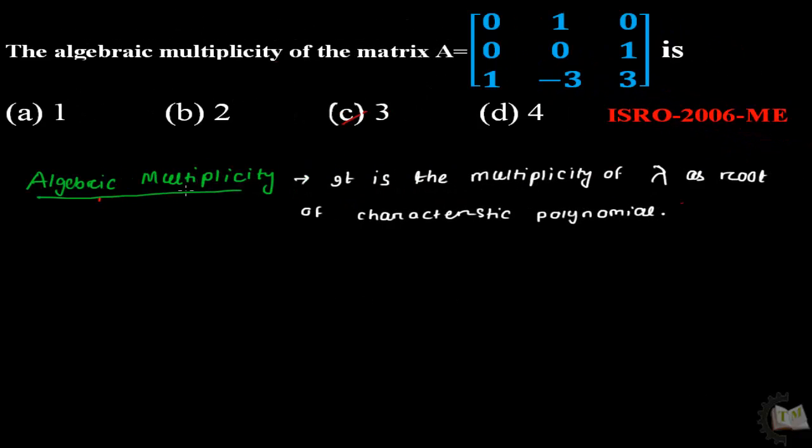This is a very important question asked in ISRO 2006 mechanical engineering branch. The question was: the algebraic multiplicity of a matrix A is dash. Before solving this problem, first try to know what is algebraic multiplicity, then we will calculate it.